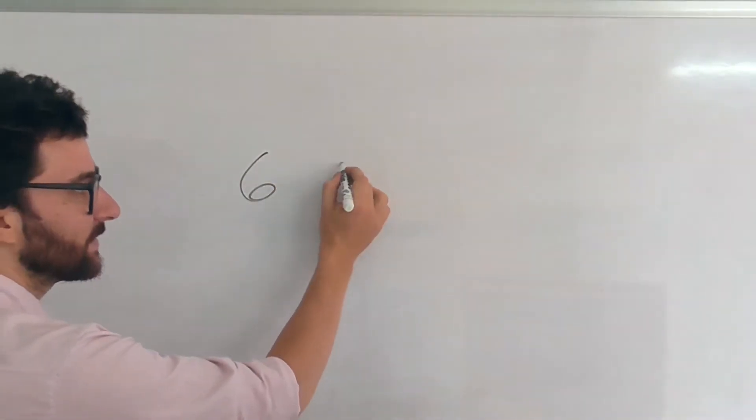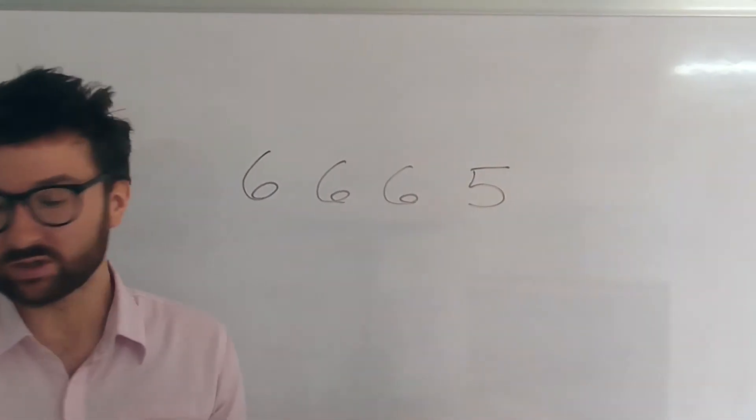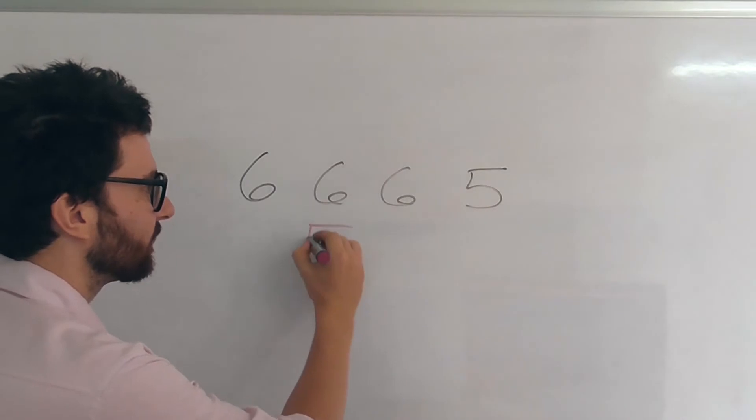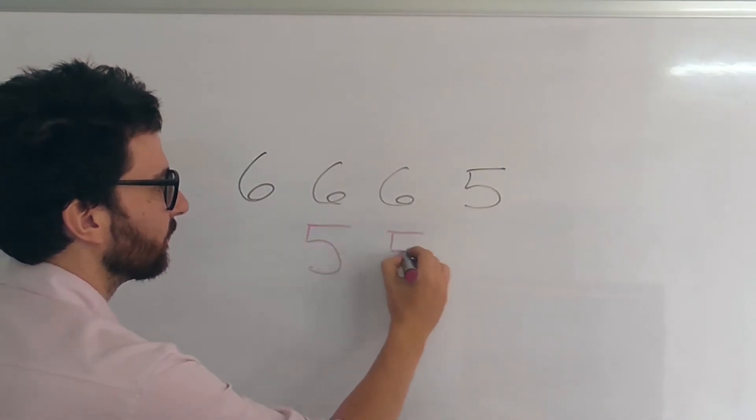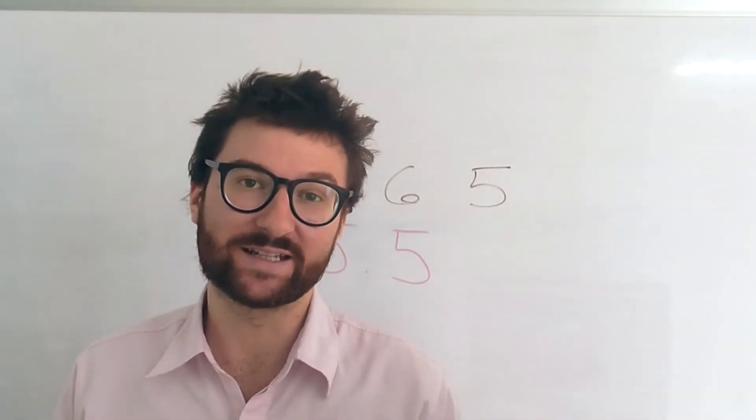If you get a six, a six, a six, and a five, your overall score for that is going to be 5.5. I'm sorry I didn't make the rules, but that's just the way that it is.